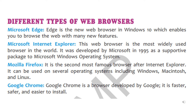Next we have Mozilla Firefox. It is the second most famous browser after Internet Explorer, and it can be used on several operating systems like Windows, Macintosh, and Linux. And last, the famous and favorite one — Google Chrome. As its name suggests, it is developed by Google only. It is faster, safer, and easy to install and use.